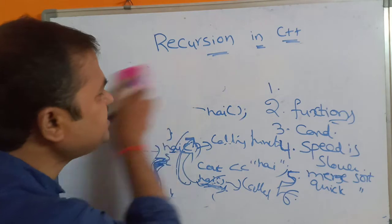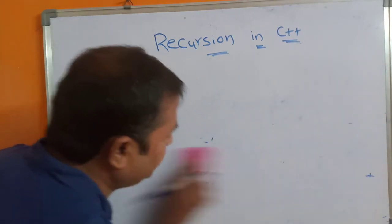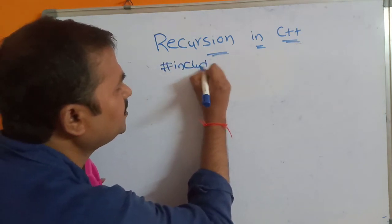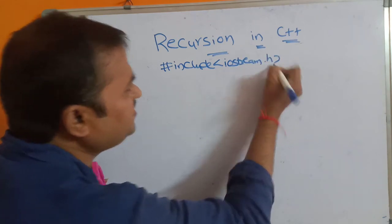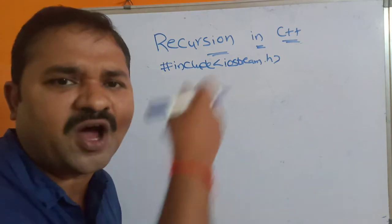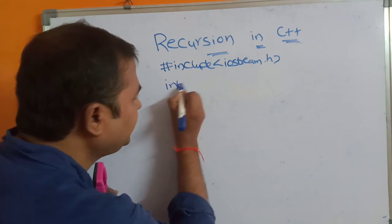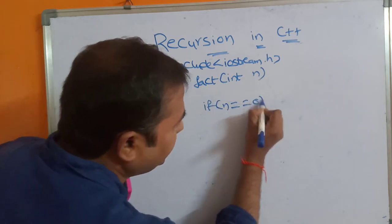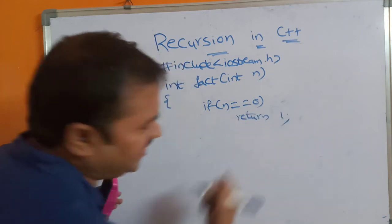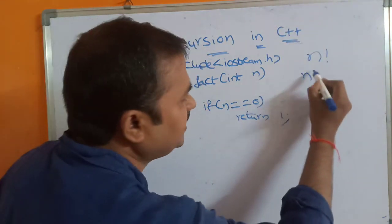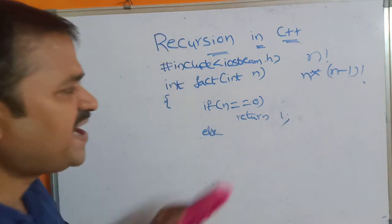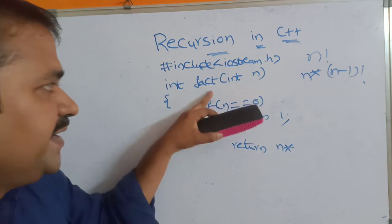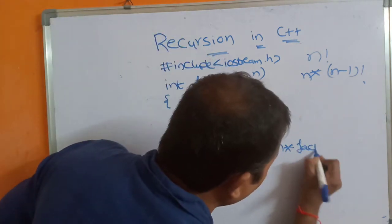Now let's see factorial of a given number using recursion. Hash include iostream.h. Now let us define the function above main so there is no need for a function declaration. int fact(int n) — here we have two conditions so I am using if-else. If n == 0, the factorial of 0 is 1, so we return 1. Else, the formula is n into n-1 factorial, so we return n * fact(n - 1).